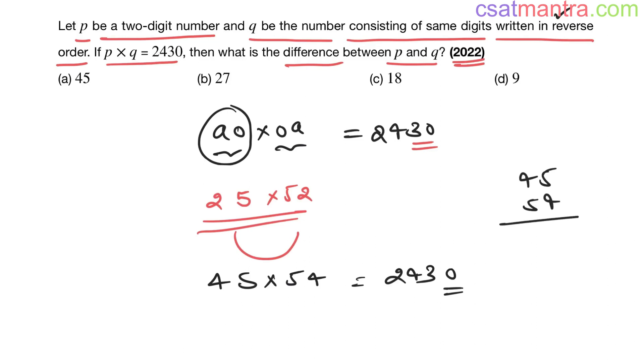45, 54s are. 4 fives are 20. 4 fours are 16, 16 plus 2 is 18. 5 fives are 25, so 2 is already there. 5 fours are 20, 20 plus 2 is 22. So 0, 8, 5, 30. This is 4, 2, 4, 3, 0. So this is the answer.